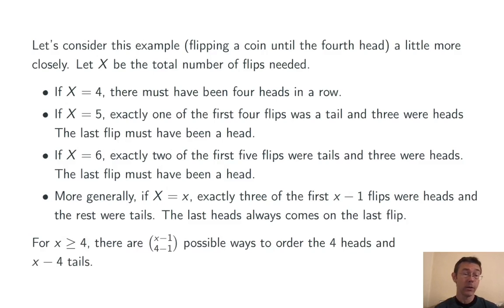For x greater than or equal to 4, because we need at least four flips to get four heads, there are (x-1) choose (4-1), or 3, possible ways to order the four heads and x minus 4 tails.